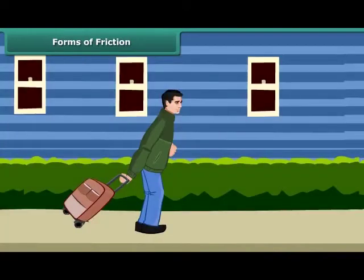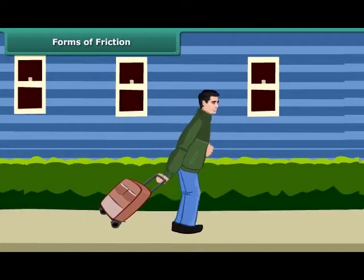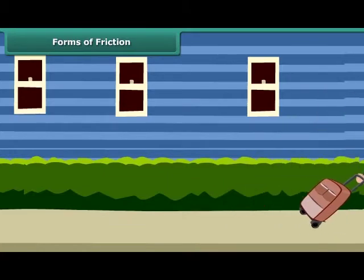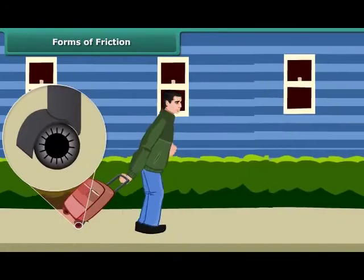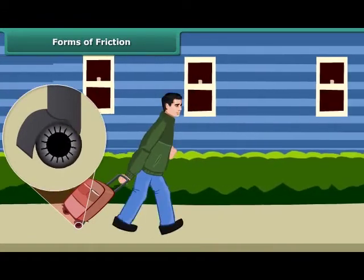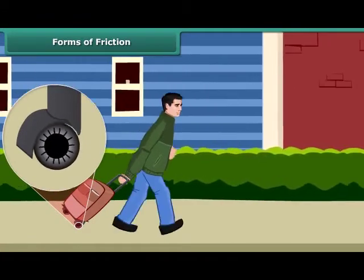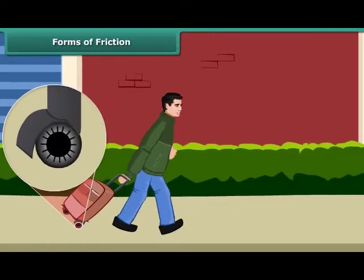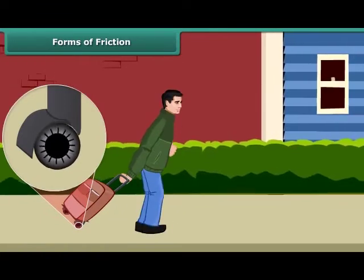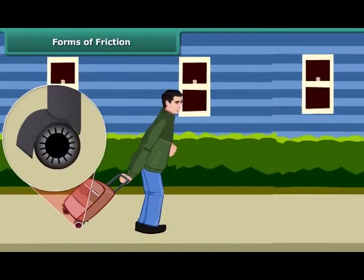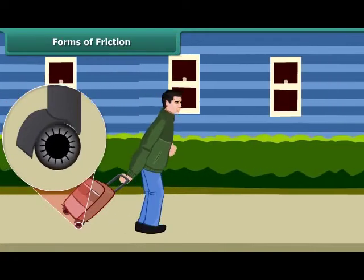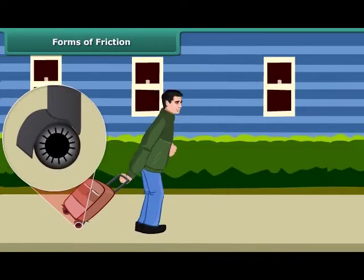You must have seen suitcases and other pieces of luggage fitted with rollers. Even a child can pull such pieces of luggage. The rollers reduce friction and allow objects to roll. It is always easier to roll than to slide a body over another — that is the reason it is convenient to pull luggage fitted with rollers.